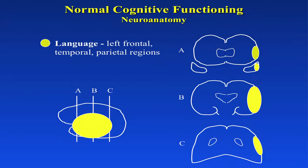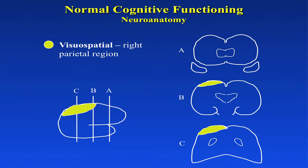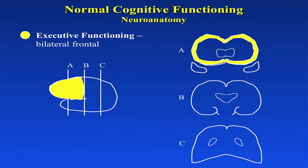Language centers are on the left outer edge in the temporal and parietal regions. CBD patients with primarily left-side involvement tend to have language problems. Conversely, the visuospatial regions are on the opposite side, slightly more superior; CBD patients with primarily right-side involvement may have more visuospatial than language problems. Executive functioning is located at the front of the brain, right behind the forehead, on both sides — and this is the primary cognitive manifestation of PSP.